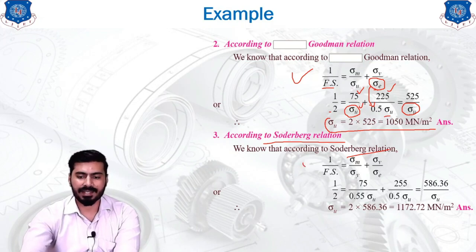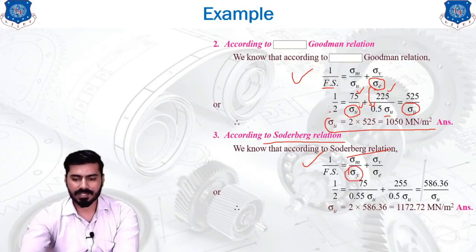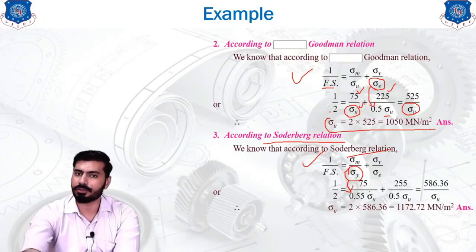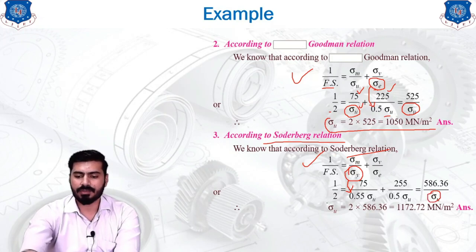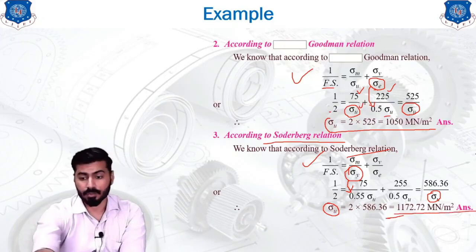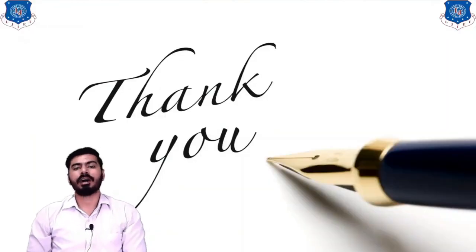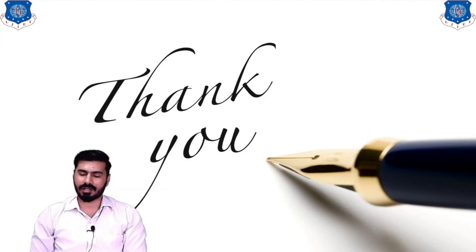Using the Soderberg method, the only change is replacing sigma-y with 0.55·sigma-u from the given data. Again, sigma-u is the only remaining unknown. Solving gives sigma-u = 1172.72 MN/m². This completes the example for calculating the minimum ultimate strength using all three methods. Thank you.